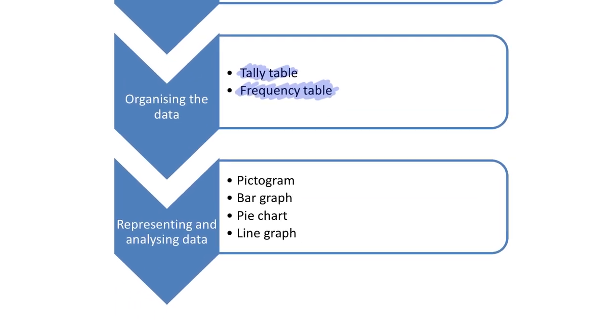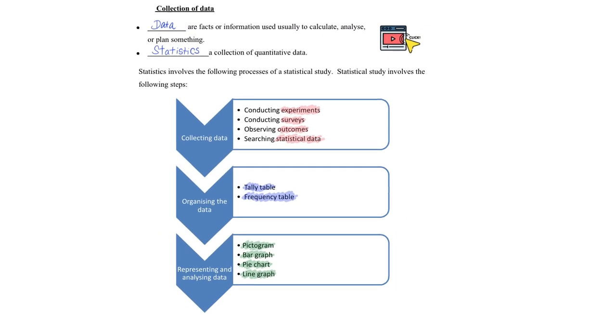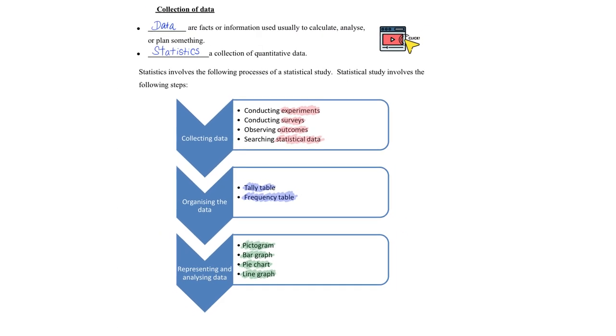And after which, we will then have to represent the data, and from the representation, we analyze the data. These are the four main graphs that we will be looking through, but this is not exhaustive, meaning there are other possible representations. All right, without further ado, let's start to go through some of the examples.